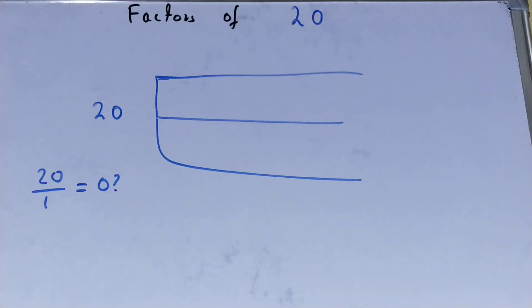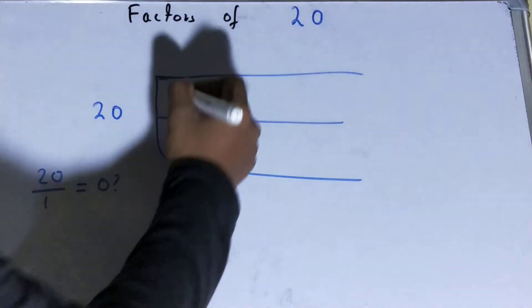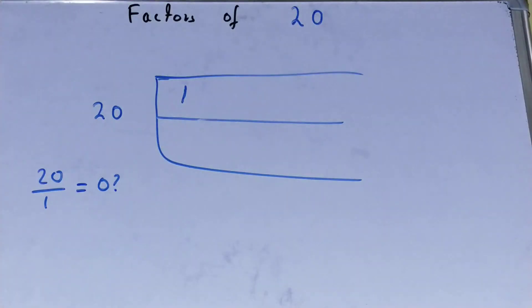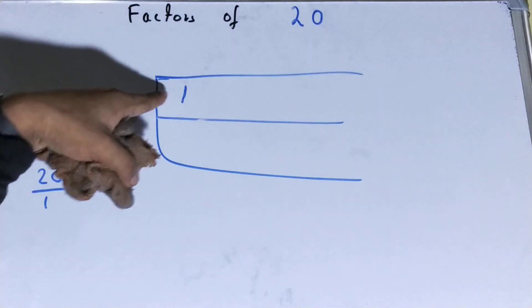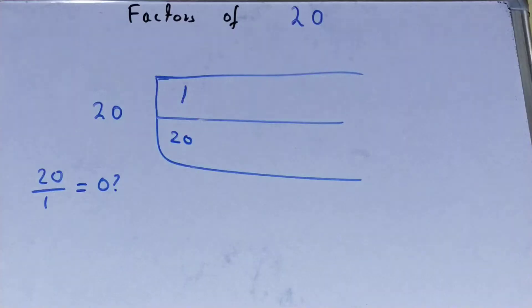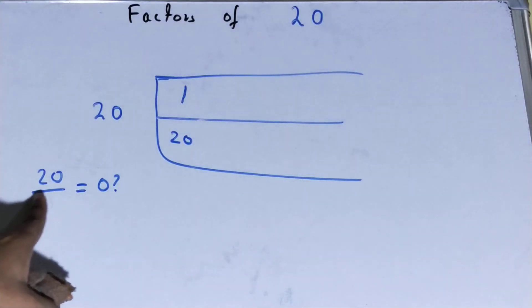If I divide 20 by 1, will I get the remainder as 0? Obviously, because 1 is a factor of all numbers. So 1 is a factor, and with this I will be finding another factor. That is, 1 into how many times is 20? 1 into 20 times is 20. So 20 will also be the factor. Like this we'll be finding in pairs.